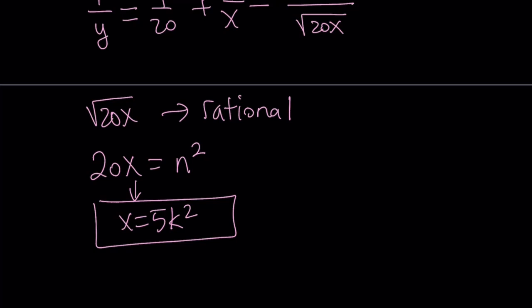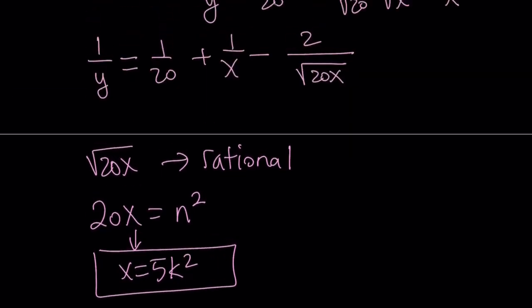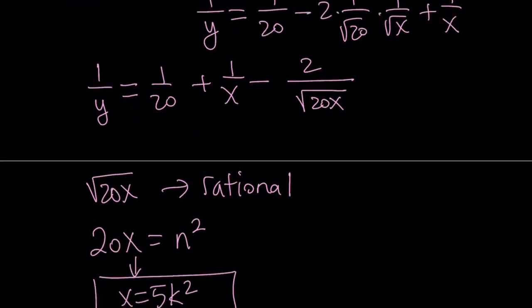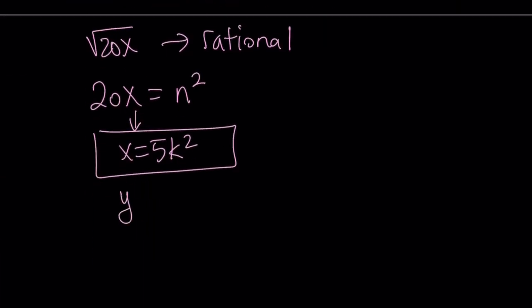And similarly, if you just isolate 1 over square root of x and square both sides, go through the same thing, y can be written as 5 times m squared. Because it's symmetrical, you're going to get the same idea.